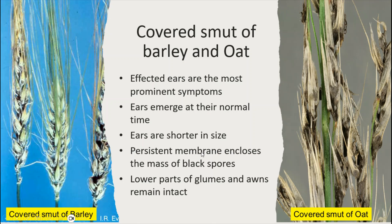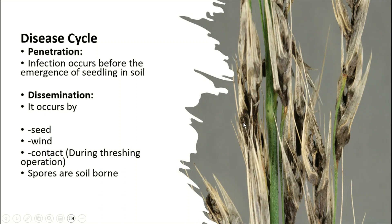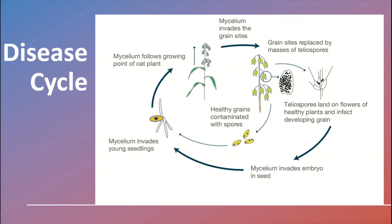The lower parts of glumes and awns remain intact. In this case, penetration takes place before the emergence of the seedling in the soil. Dissemination occurs by seed, wind, and contact during threshing operations. Sometimes the spores are also soil-borne. Here you can see the disease cycle.